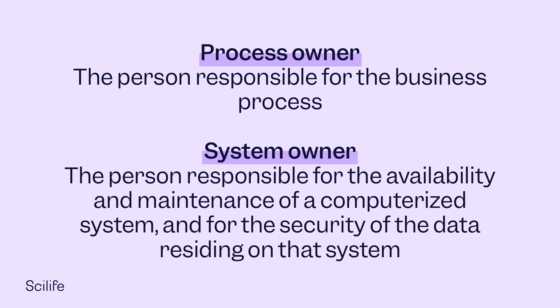The process owner is the person responsible for the business process — typically a senior manager, as a business process may impact more than one department. The system owner is the person responsible for the availability and maintenance of a computerized system and for the security of the data residing on that system — for example, a senior laboratory manager. The system owner would be held accountable if the system validation is wrong or incomplete.